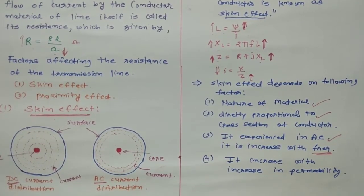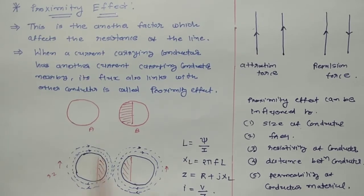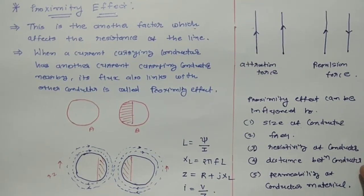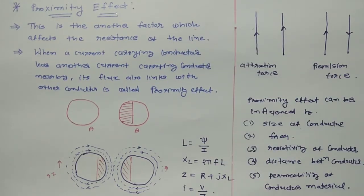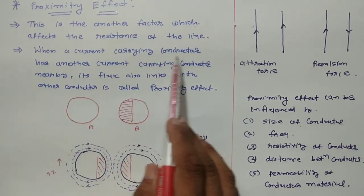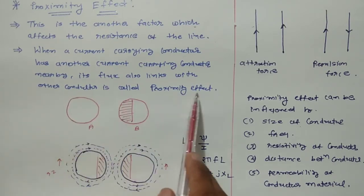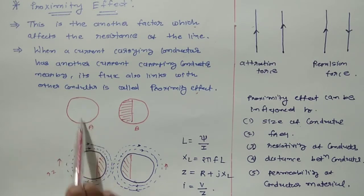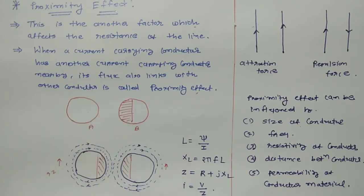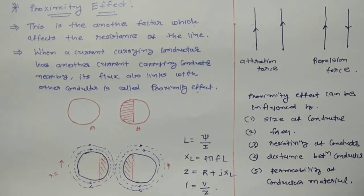Now I will discuss about proximity effect, which is another factor that affects the resistance of the transmission line, just as skin effect does. The basic definition: when a current-carrying conductor has another current-carrying conductor nearby, its flux also links with the other conductor — this is called proximity effect. Proximity effect generally occurs between two or more conductors.